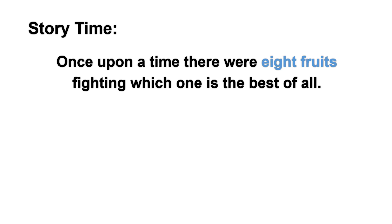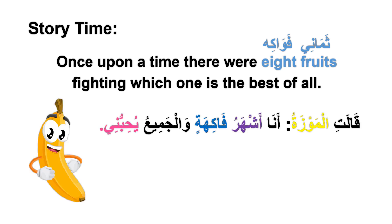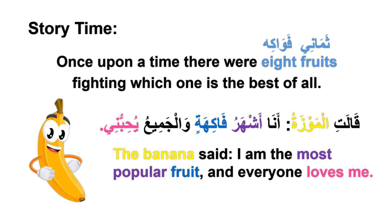Now let's delve into an interesting story. Once upon a time, there were eight fruits — ثماني فواكه — fighting over which one is the best of all. The banana said: قالت الموزة، أنا أشهر فاكهة والجميع يحبني — I am the most popular fruit and everyone loves me.